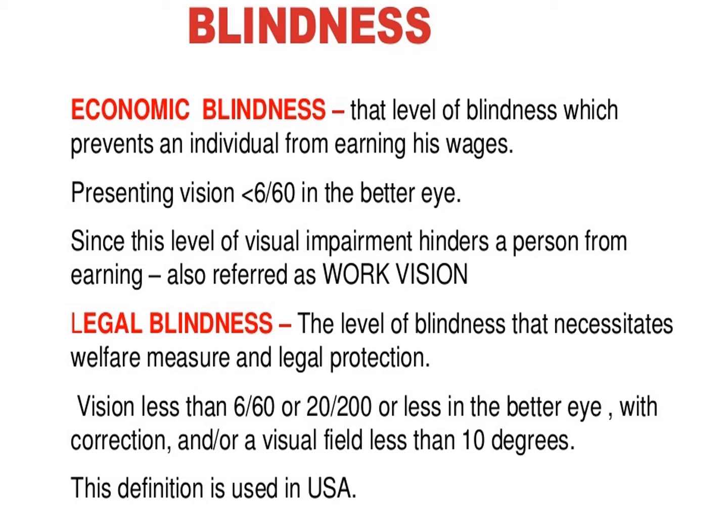Legal Blindness: the level of blindness that necessitates welfare measures and legal protection. Vision less than 6/60 or 20/200 or less in the better eye with correction, and/or a visual field less than 10 degrees. This definition is used in the USA.